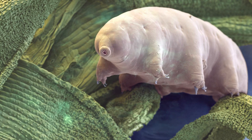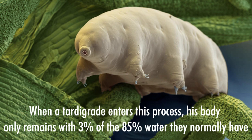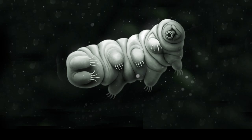This state consists of entering suspended animation. When a tardigrade enters this process, his body only remains with 3% of the 85% water they normally have. Its metabolism, growth, and reproduction are interrupted and may be in that state for years.